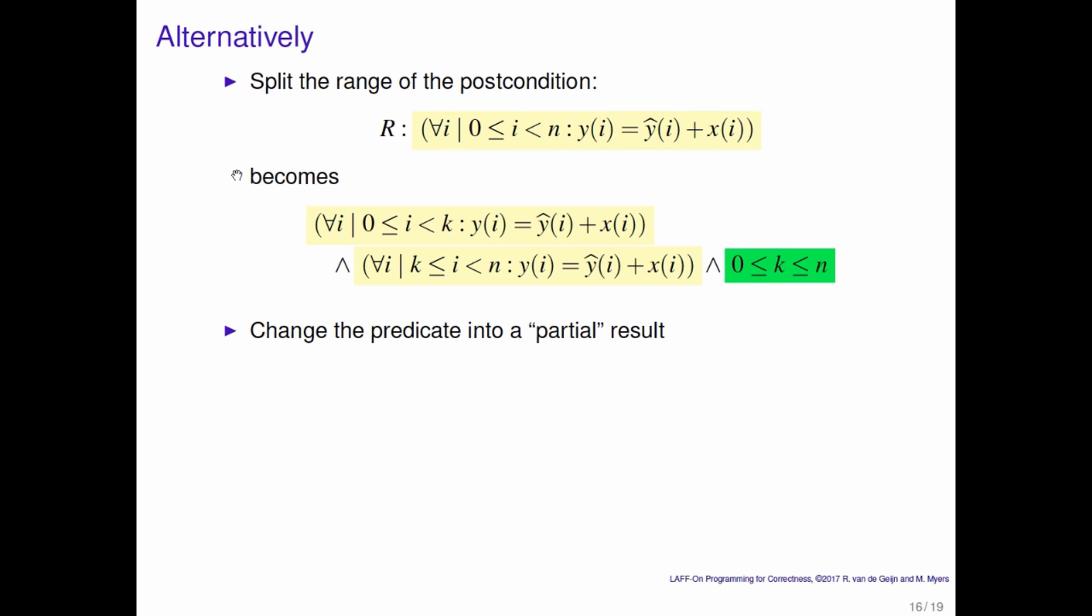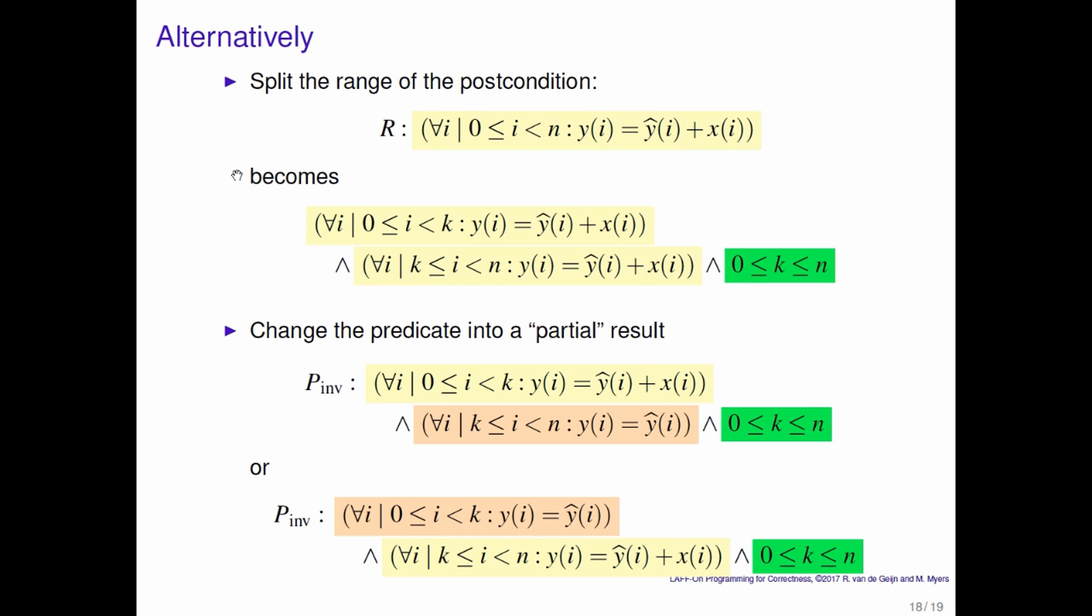Now, what constitutes a partial result? A partial result can be created by saying that the first K entries have been updated but not the rest of the entries. Notice that what's in orange here now constitutes the original values in Y and therefore is part of the precondition. Or you can say that the first K entries have been left alone and the rest of the entries have been updated. And both of these constitute a partial result towards the final result.